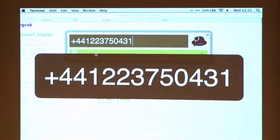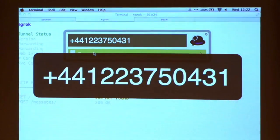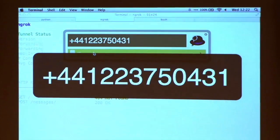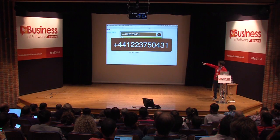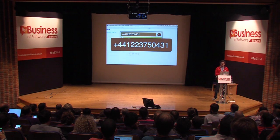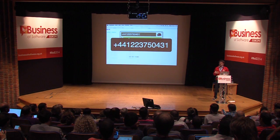I'm running this on a local machine. If everyone wants to send an SMS message now to 01223 — or plus 44 if you're from abroad — 750 431, and if you get a reply, wave your hands in the air so I know it's working. You can see down here we're getting POST messages coming in on the server. People are getting replies — awesome. So that's inbound SMS built very quickly.